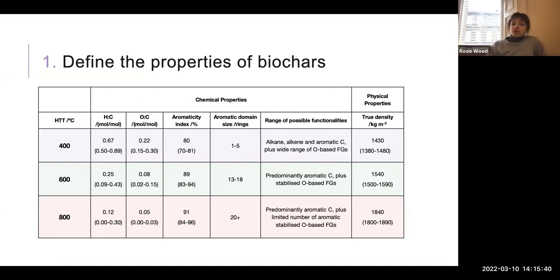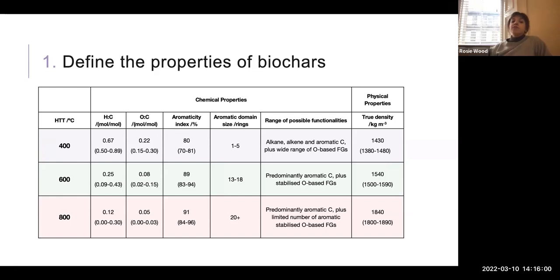I then also went through literature and looked at functional group data, mostly from FTIR, which gave me some functional groups I might want to include in my molecules. I have split this into two parts: chemical properties, which I can input into my model via my molecular building blocks; and physical properties, which I will output from my molecular model and then analyze and check that they're representative.